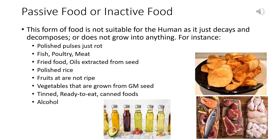Passive or inactive food is not suitable for humans as it just decays and decomposes or doesn't grow into anything. For example, polished pulses — they just rot. Fish, poultry, meat — if you leave them outside, they will just get spoiled. They need to be frozen to maintain their texture. Fried food — any food which is active in nature, but if you fry it in oil, it becomes a passive food after that.